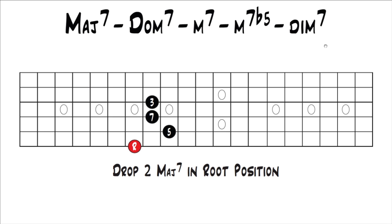This first one we're going to start with is a drop 2 major 7 in root position. We're not worried about what key this is in — we're just looking at the shape and the intervals in the shape. This is on the 6th, 5th, 4th, and 3rd strings. A major 7th chord is a root, major 3rd, perfect 5th, major 7th.